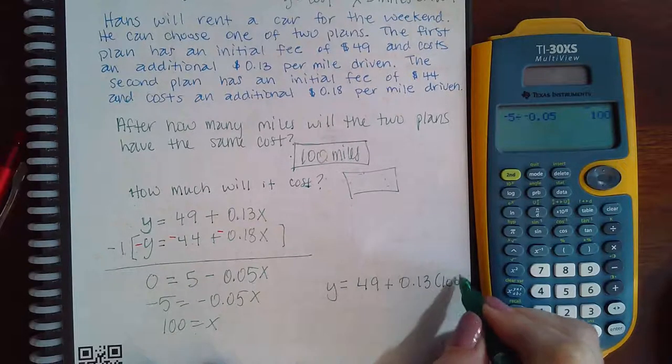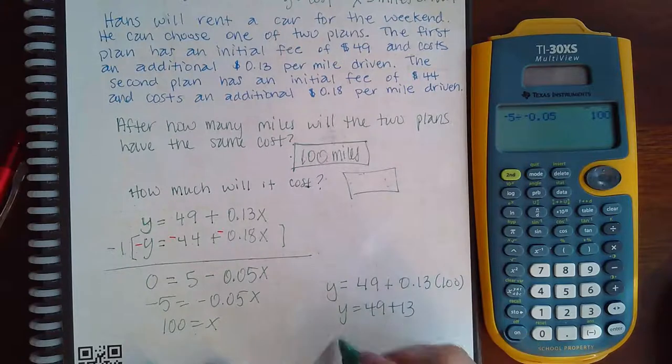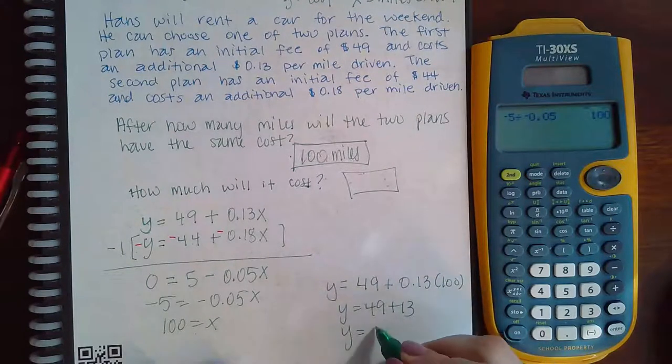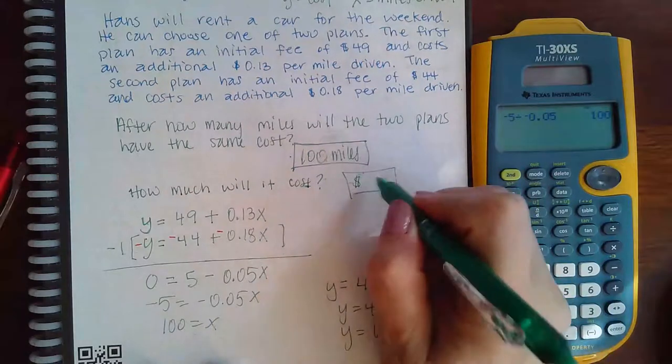So 0.13 times 100 I get y equals 49 plus 13. So y equals 62. So then here it would be $62.